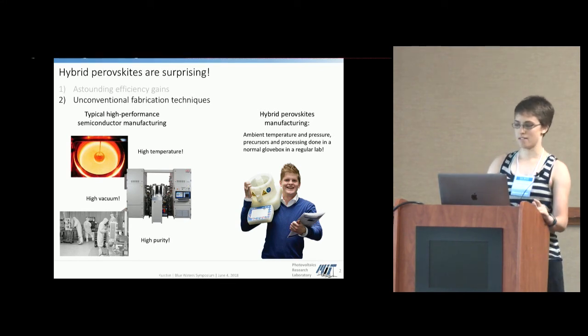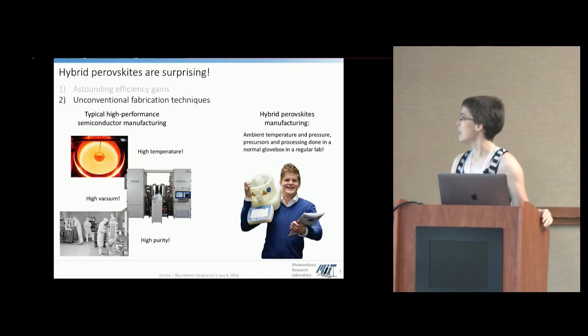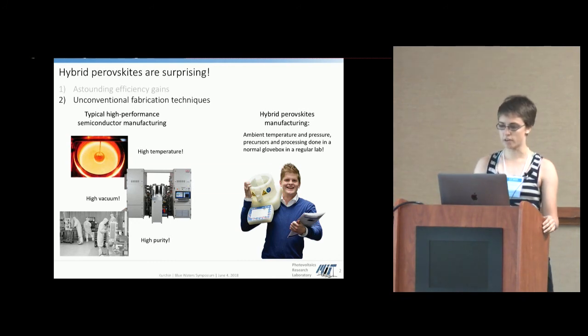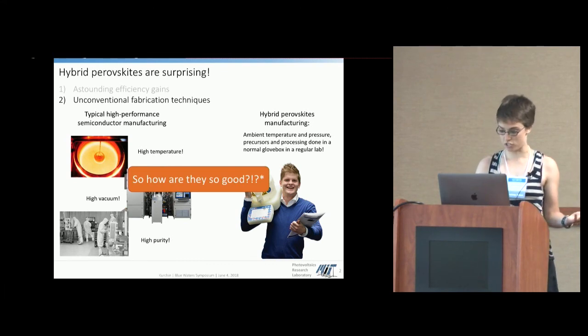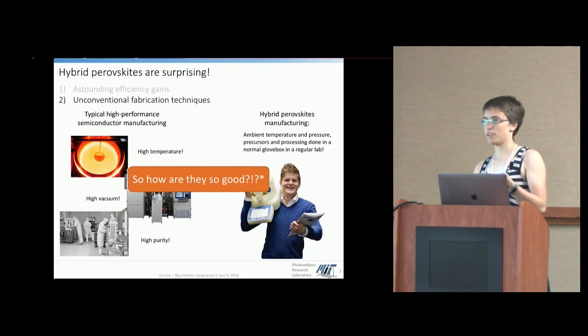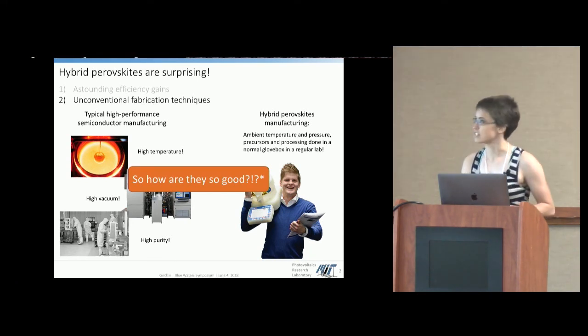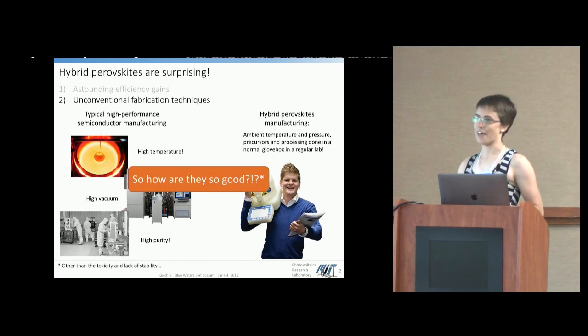But an outstanding question you might be asking is if we always needed all of this really expensive, high temperature, high vacuum, high purity stuff before, how is it that the perovskites are so good? How can they get these really high efficiencies? And if you're observant, you'll see that there's a little asterisk there. And the asterisk is other than the toxicity and lack of stability issues.